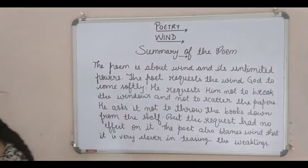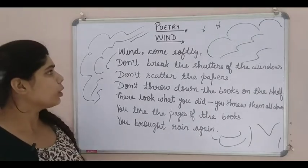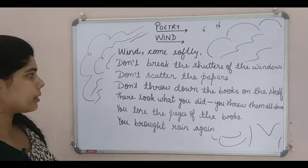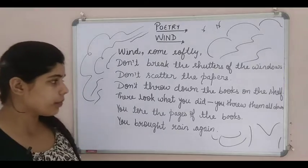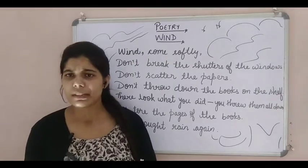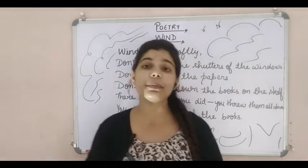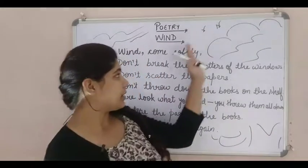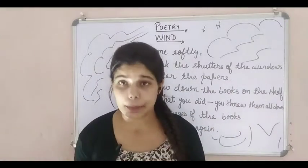So let us go through the poem and see what the poet tells us. Here is the first stanza: 'Wind, come softly. Don't break the shutters of the windows. Don't scatter the papers. Don't throw down the books on the shelf. There, look what you did — you threw them all down. You tore the pages of the books. You brought rain again.' One thing to note about this poem is that it has no rhyming scheme. The last words of each and every line are all different — nowhere do they form any rhyming scheme.